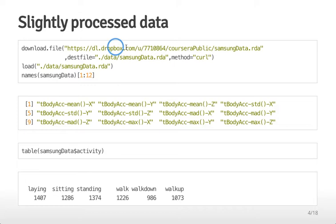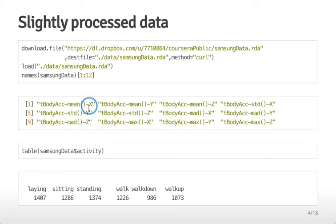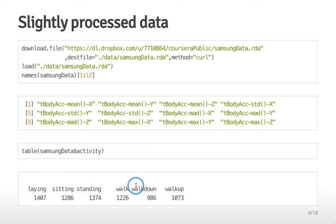The first thing I do is download the file and load it into R. Looking at the variable names, you can see they are all measures of acceleration summarized over a period of time — each measurement has a summary statistic like mean, standard deviation, or median absolute deviation, along with which axis it was taken on: x, y, or z. The dataset also has an activity variable telling you what the subject was doing — laying, sitting, standing, walking, or walking up and down stairs — roughly equally distributed across those activity types.